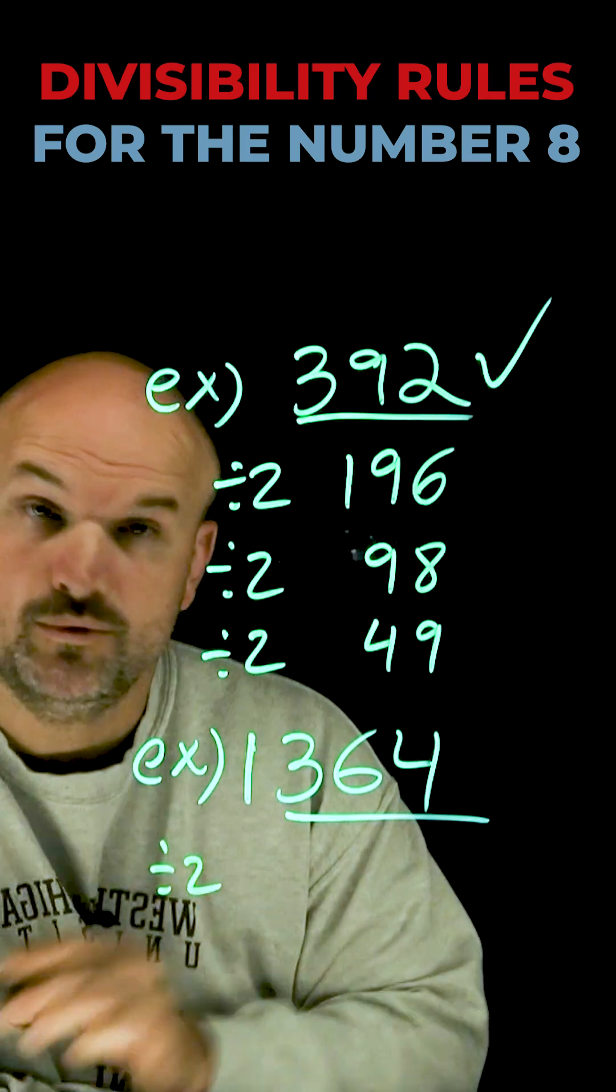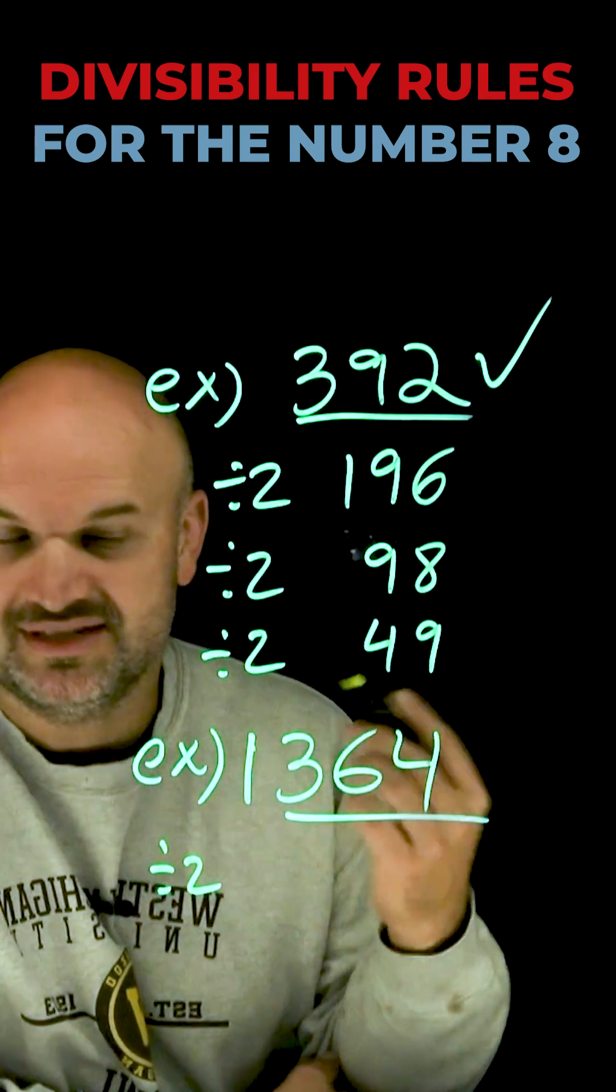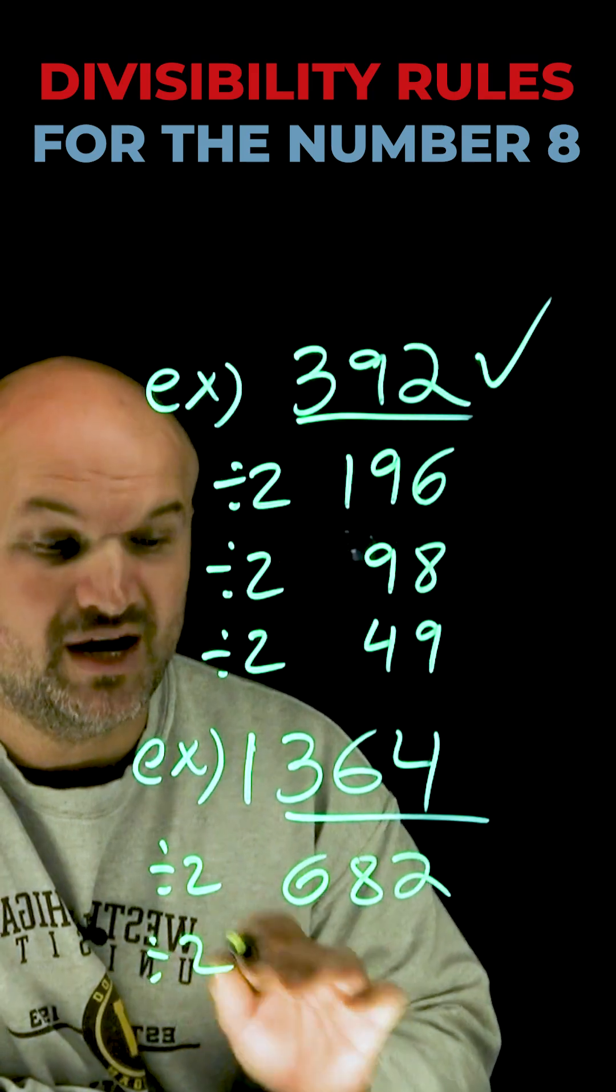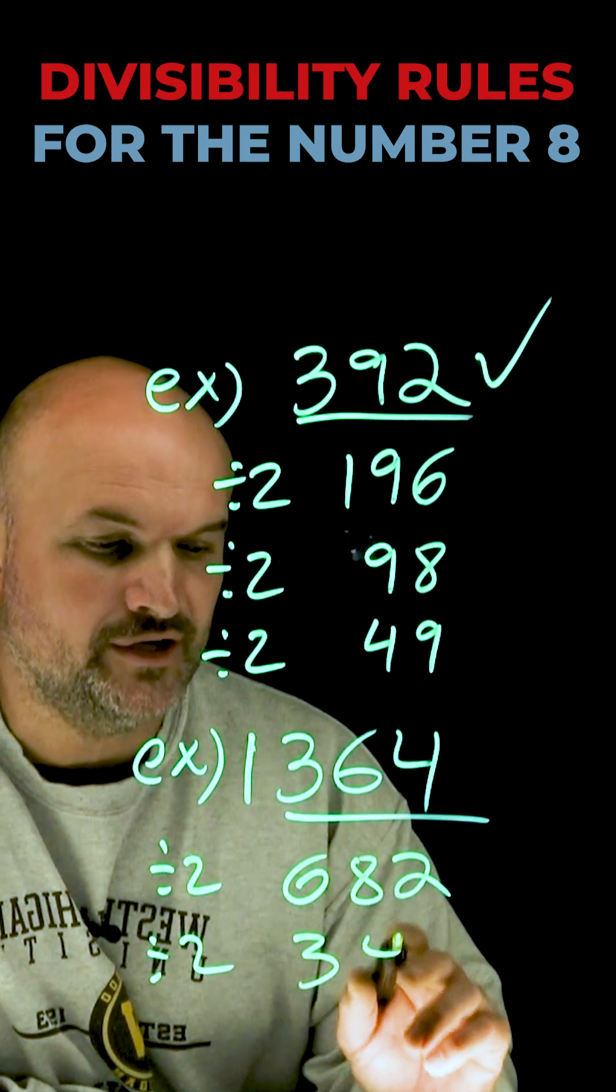So, let's go ahead and divide this by 2 one time. I take 1,364, divide that by 2, I'm going to get a 682. When I divide it by 2 again, now I'm going to get a 341.